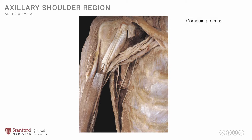In order to get ourselves oriented, let's see where the coracoid process is, which is over here, and the clavicle, which is seen over here. These two structures can orient ourselves and we can now identify our first muscle, which has been cut, and the cut portion is seen here — the pectoralis minor. The pectoralis minor is attached to the coracoid process and then extends up to the chest wall; the inferior part of this muscle has been cut away.